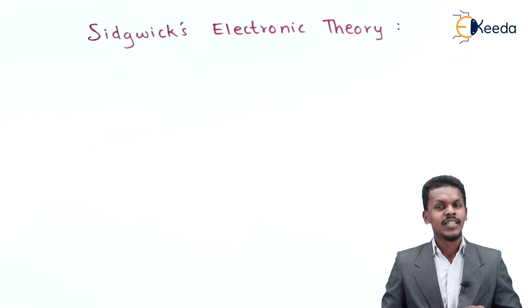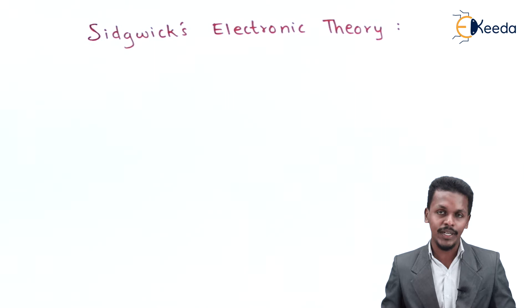I'm going to talk about a new theory, Sidgwick's Electronic Theory. What is this theory? In previous chapters we discussed how to draw the Lewis structure of an atom and how it forms a bond. Similarly, Sidgwick extended the theory of Lewis for coordination compound formation.